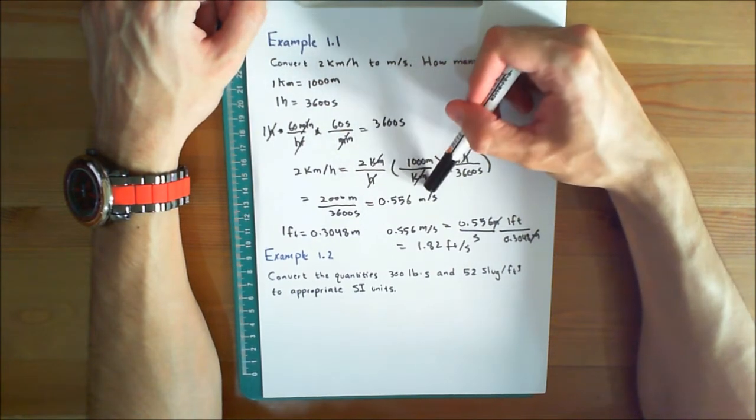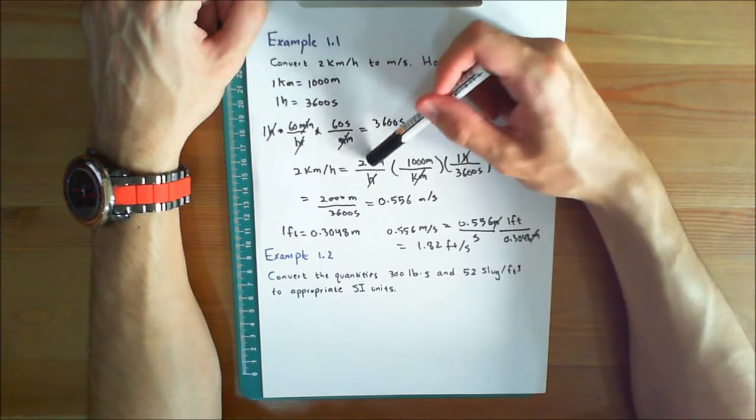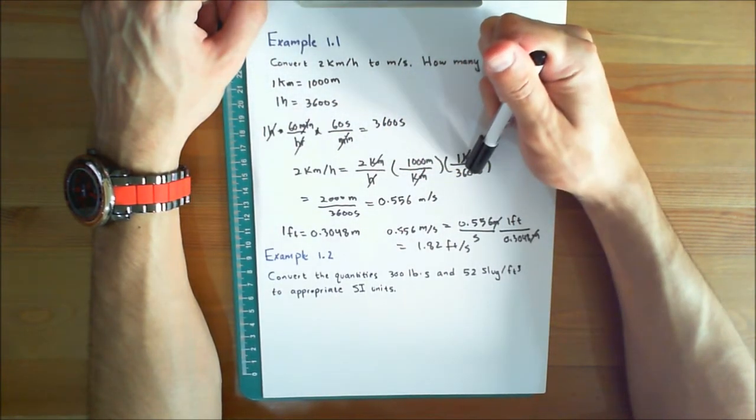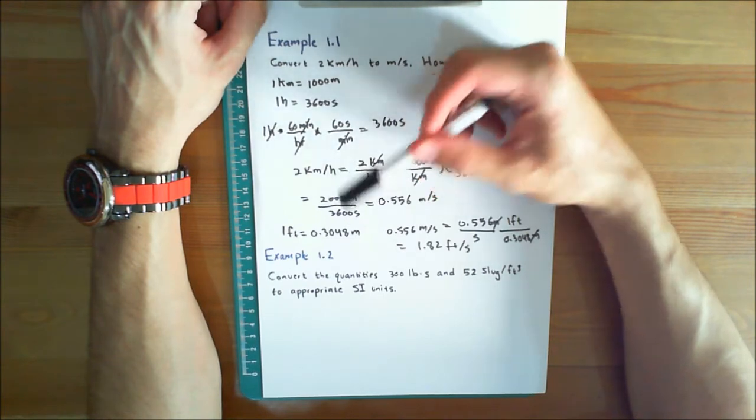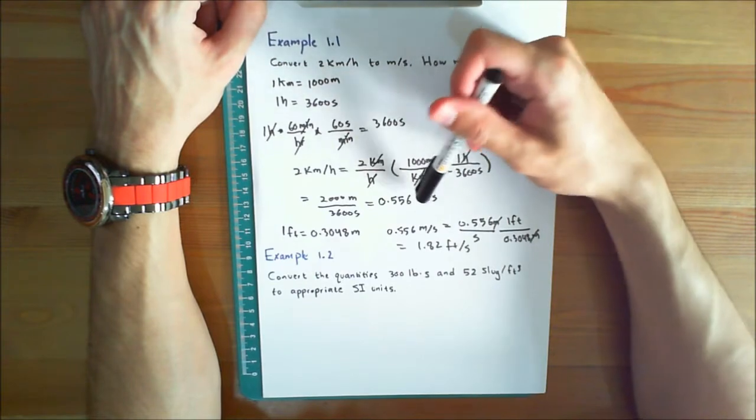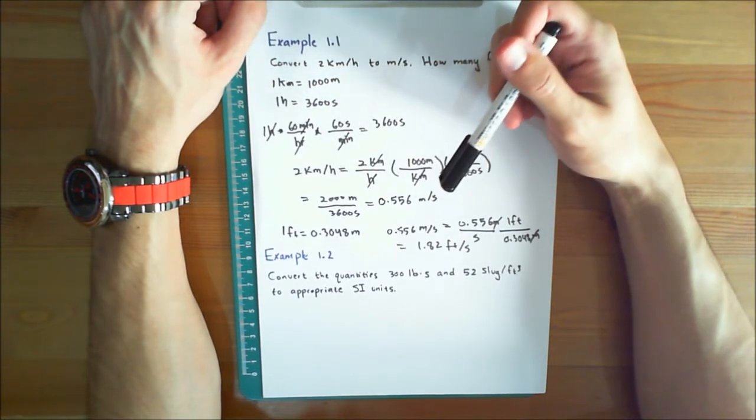And this would give you 2 times 1000, which is 2000 over 3600 meters per second. The answer is equal to 0.556, rounded off to 3 significant figures as discussed in the previous video.